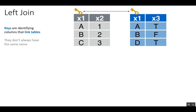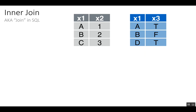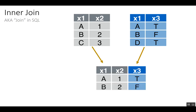In a left join, we care about preserving all the rows in the gray (left) table. If there isn't a matching row in the blue (right) table, it fills in with missing values or NULL in SQL. Observation D from table two is totally removed in a left join. In an inner join — just called a join in SQL — you grab only rows found in both tables' keys. The values common to both keys are A and B, so only those rows are returned.